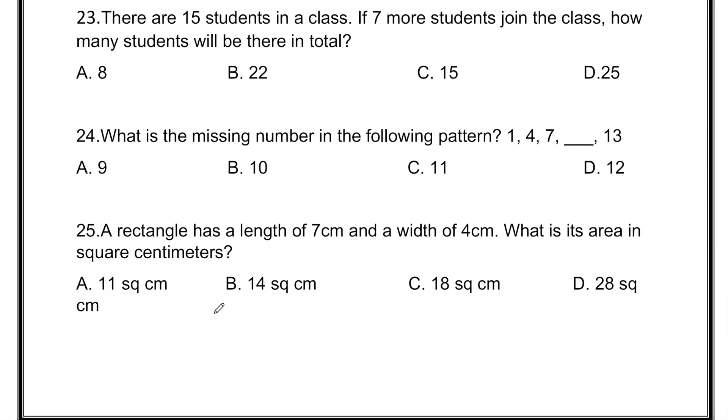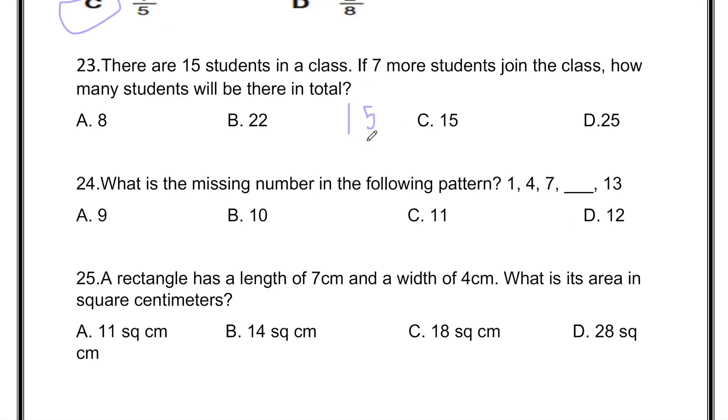So there are 15 students in a class. If 7 more students join the class, how many students will be there in total? We have to do 15 plus 7 because the word total always tells us that we have to plus. 5 plus 7 is 12, so 1 will carry over here and 2 will come down. And 1 plus 1 is 2. That means 22 is the answer.